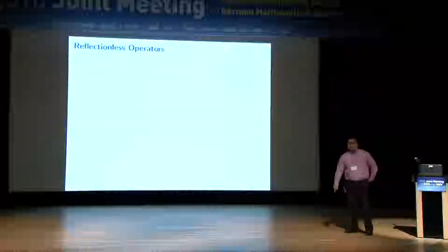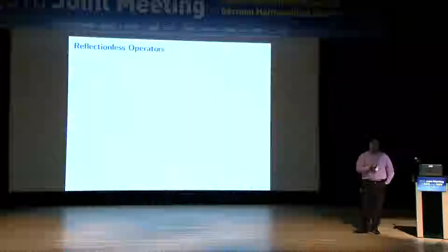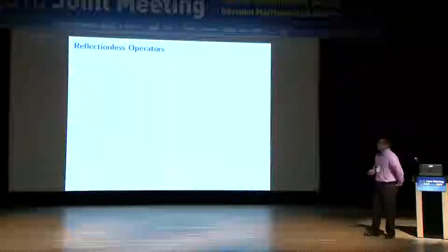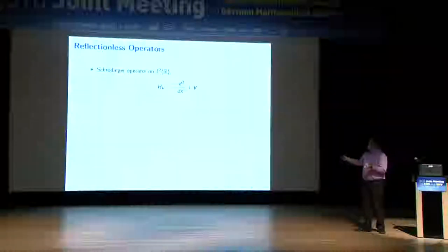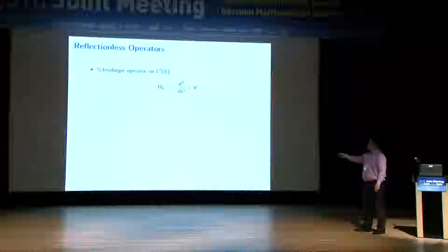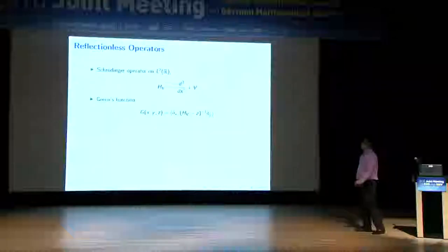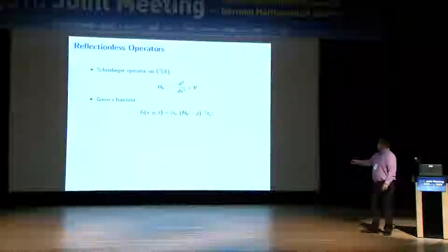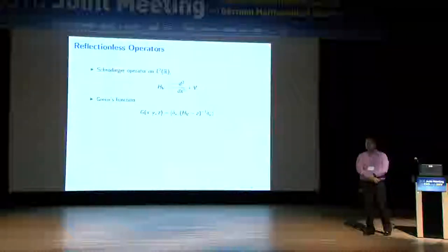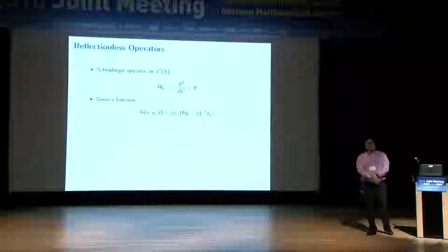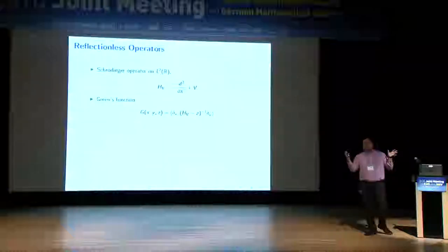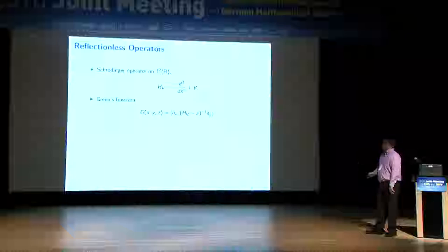The next slide introduces reflectionless operators, which is the absolutely key definition. Remember, our functions are used as potentials for Schrödinger operators. You take V as a multiplication operator, add it to the one-dimensional Laplacian, and get a self-adjoint operator in L². You look at z's for which you can invert H_V minus z times the identity — those z's belong to the resolvent set. The inverse acts as an integral operator whose matrix elements are called the Green's function.